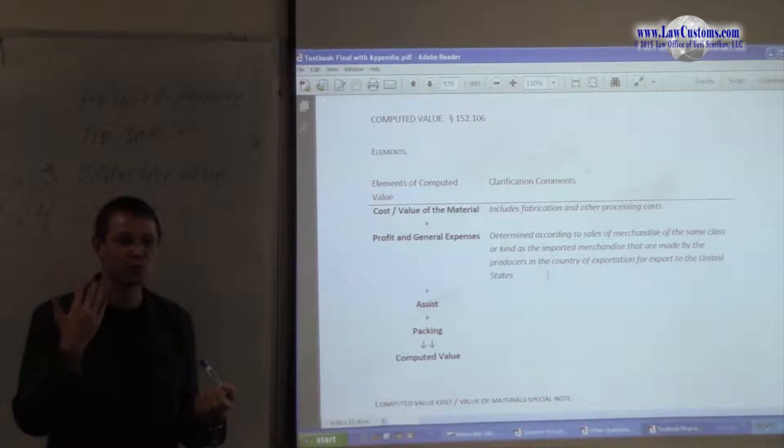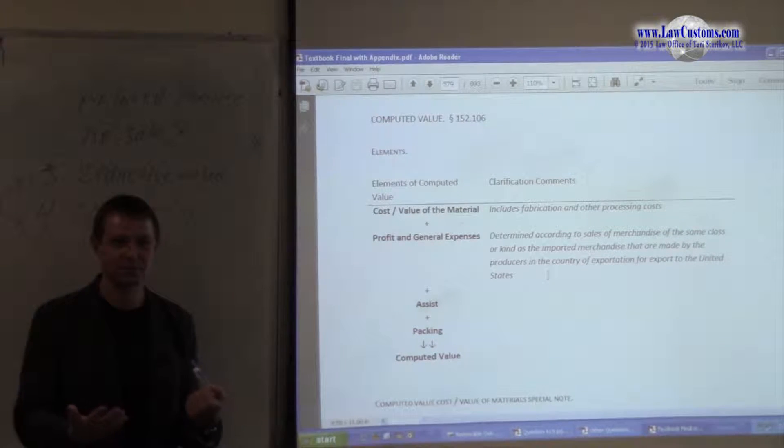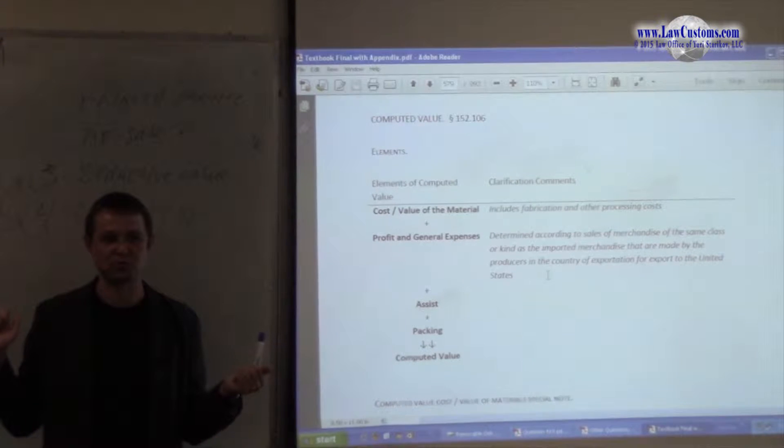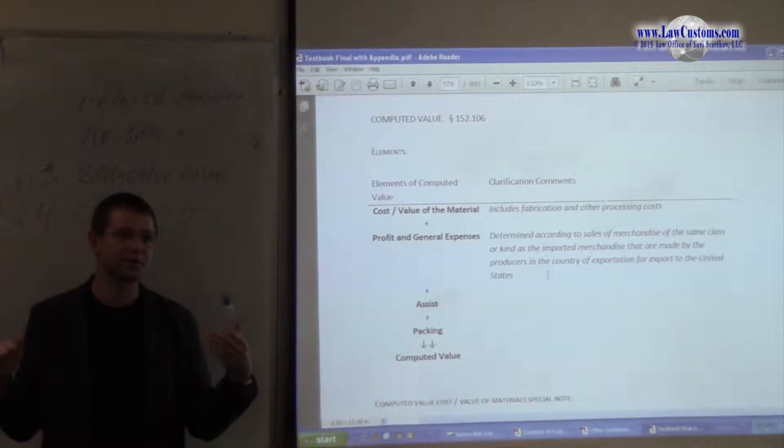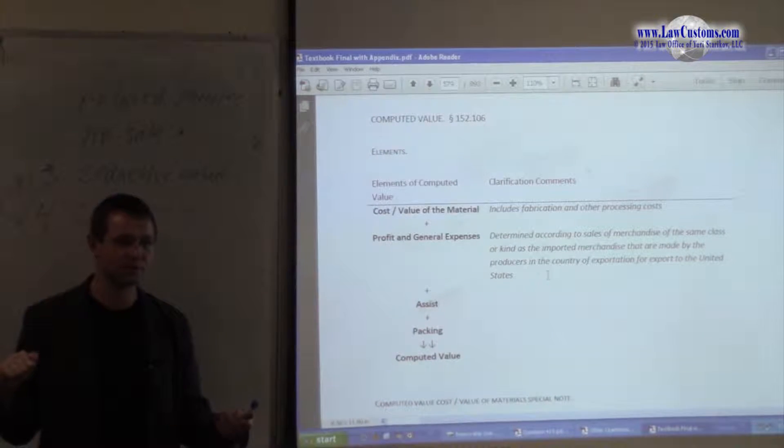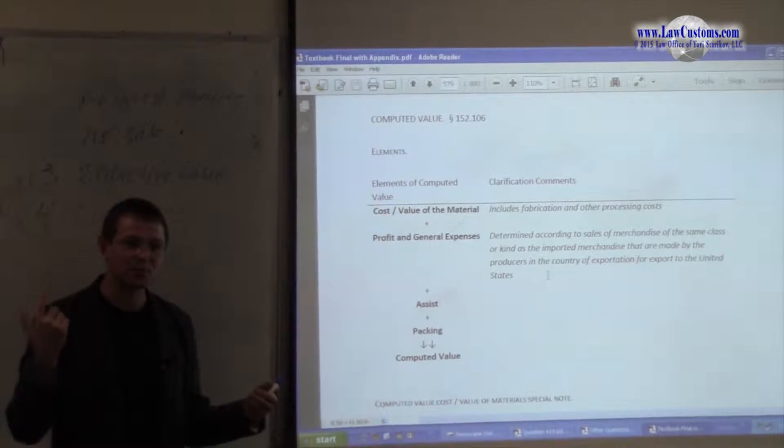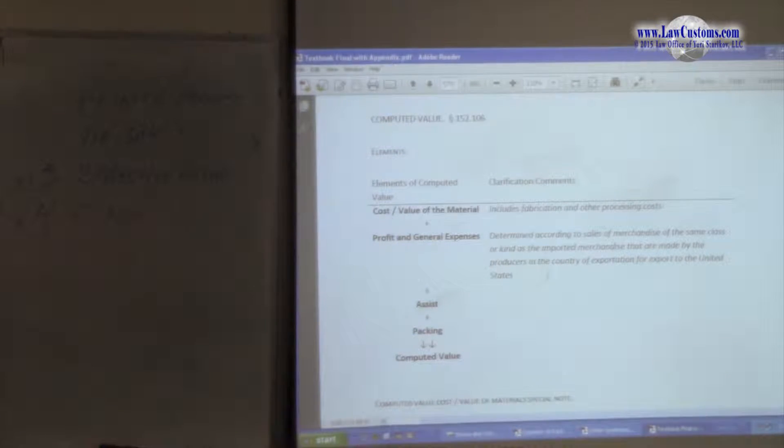What value do you put on the invoice, on the customs invoice or the invoice that says for customs purposes only? Well, either deductive value or the computed value. If deductive value doesn't work for you because you don't want to stick to this 180, 90 day rule requirement, then you can use computed value. But the computed value concept can be tricky and we'll see why.